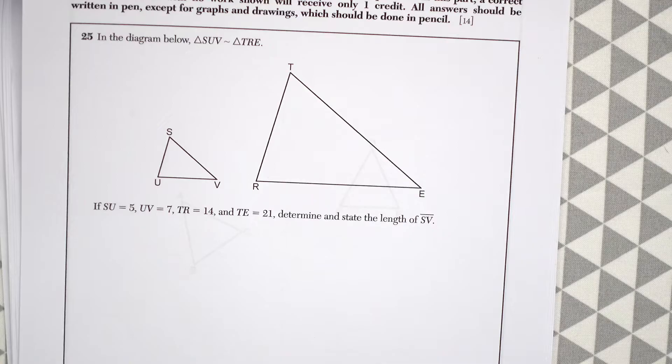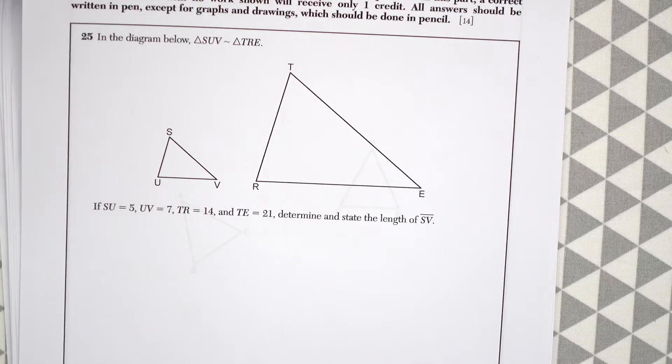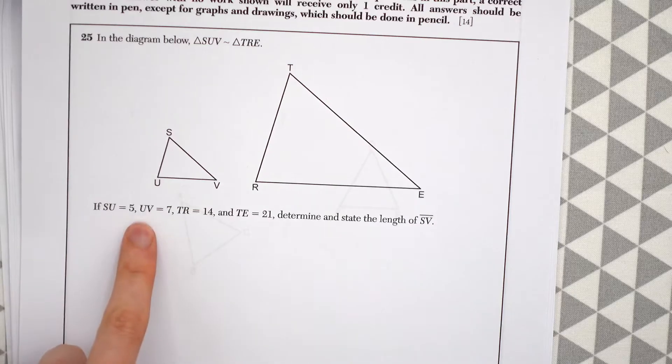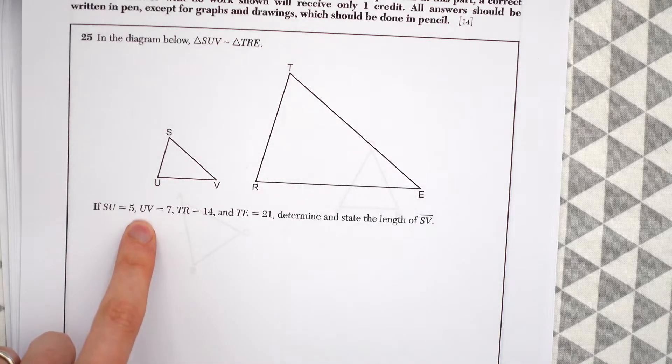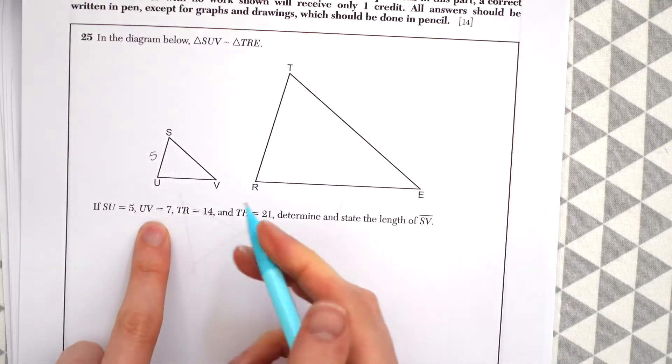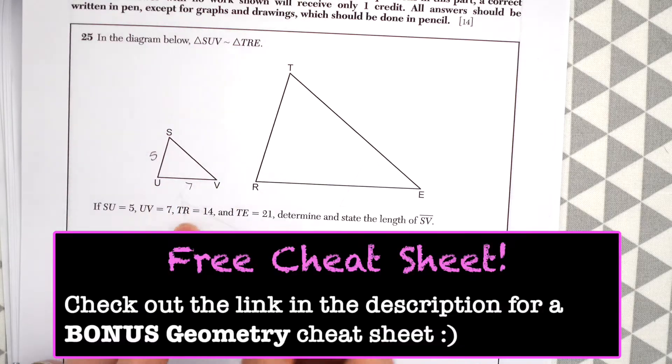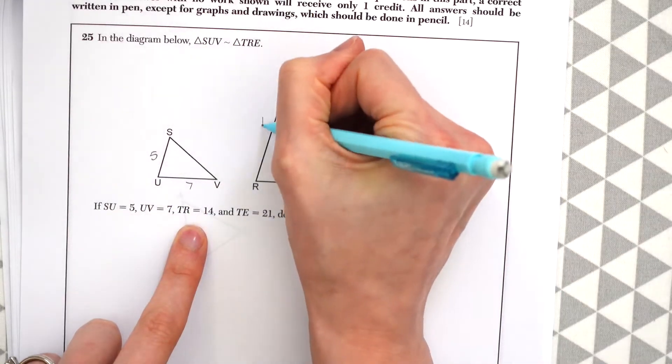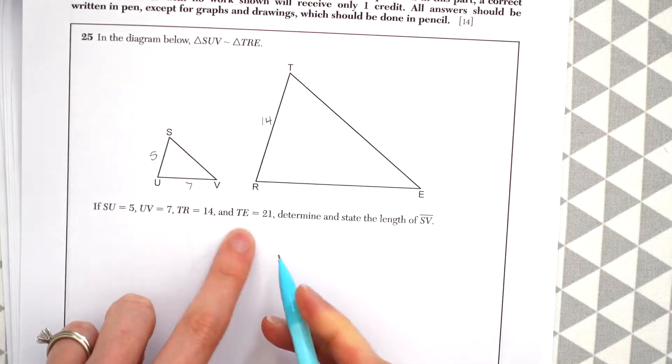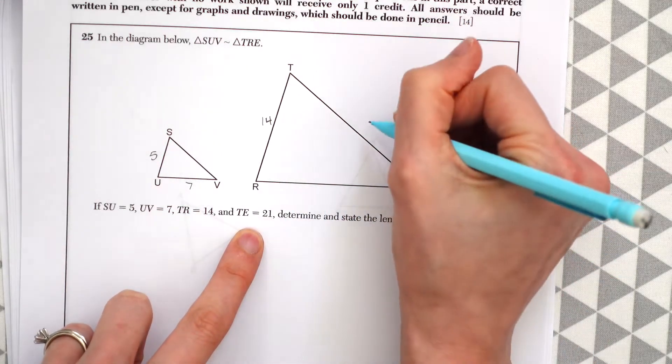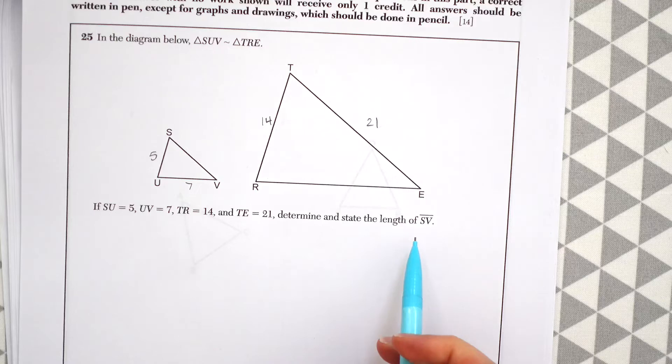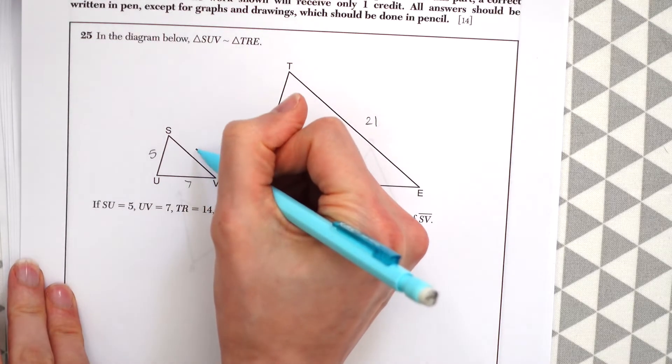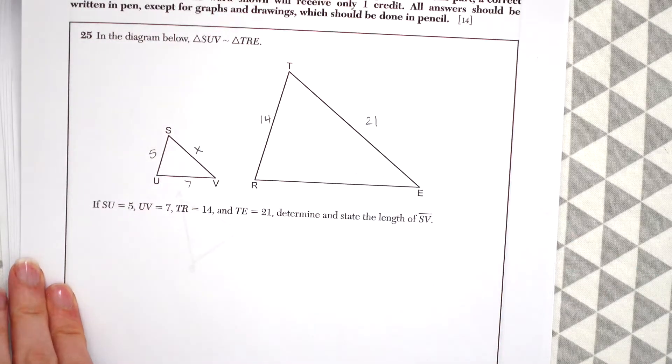In the diagram below, triangle SUV is similar to triangle TRE. If SU is equal to five, UV equals seven, TR equals 14, and TE equals 21, determine and state the length of SV. So we're trying to find this value here. I'm going to call it X.